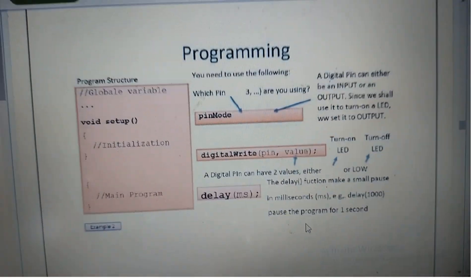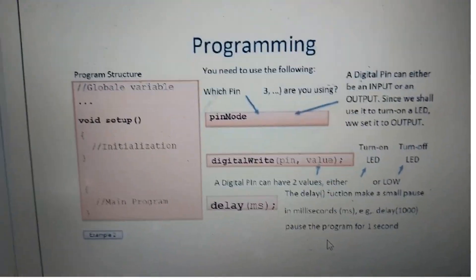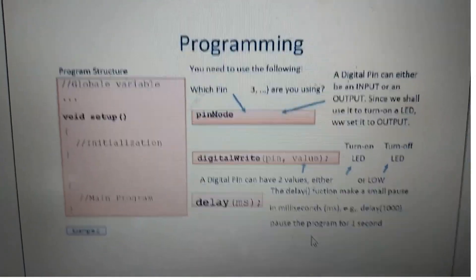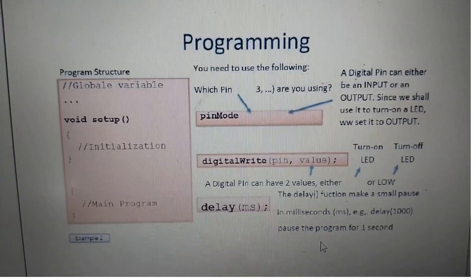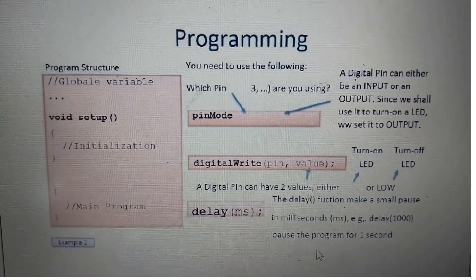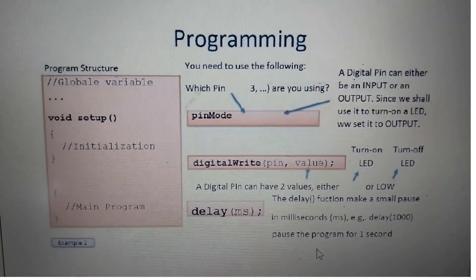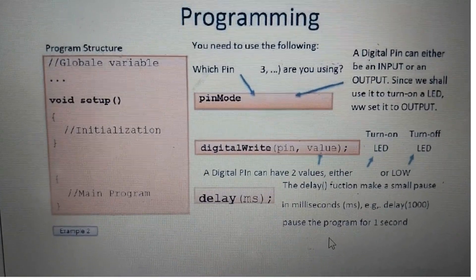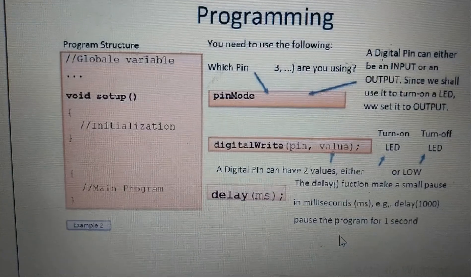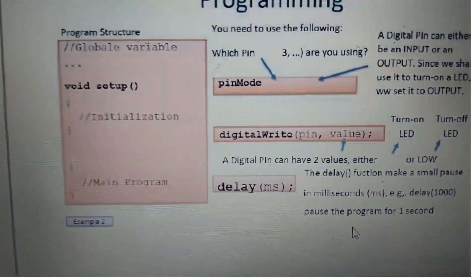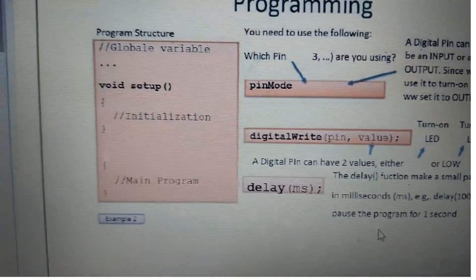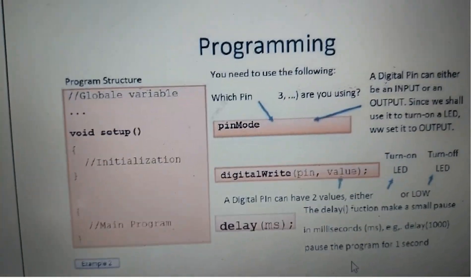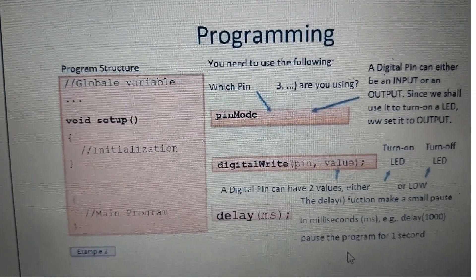What is the programming structure? The program structure has global variables on the left side, followed by initialization in the setup, and then we write the main program. This is the structure of an Arduino program.